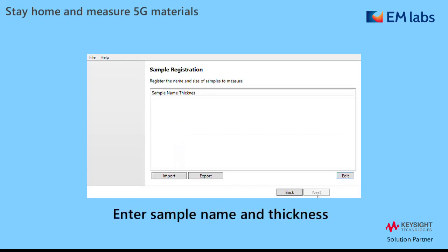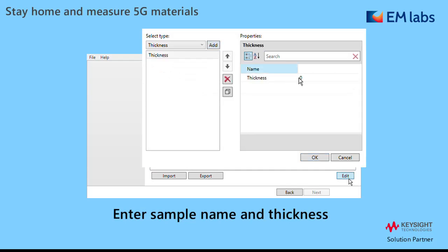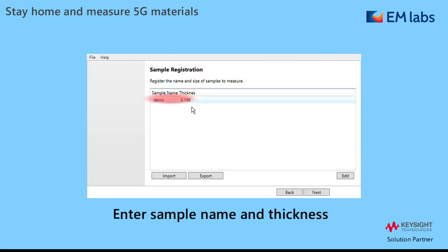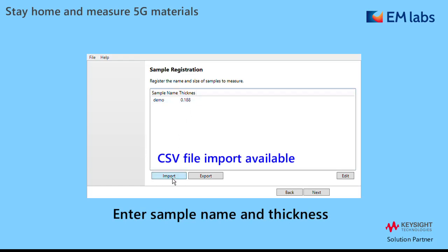The next step is sample data input. Open the editor and enter the name and thickness. If there are many samples, it's convenient to prepare a CSV file with Excel, then import it here.